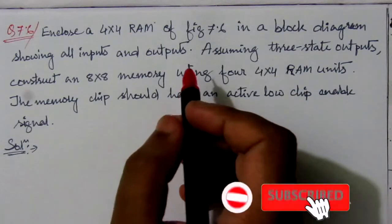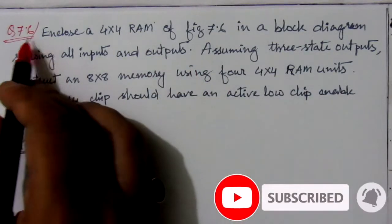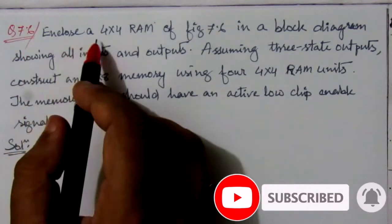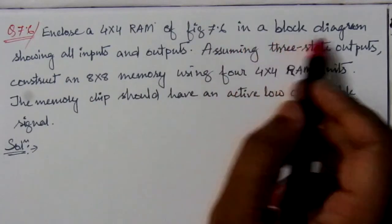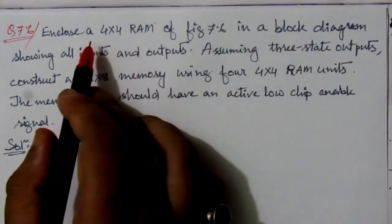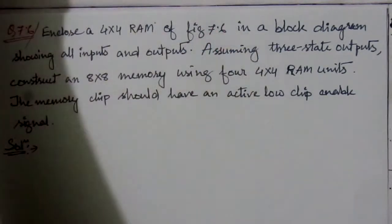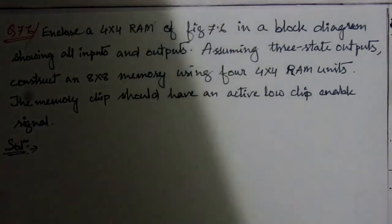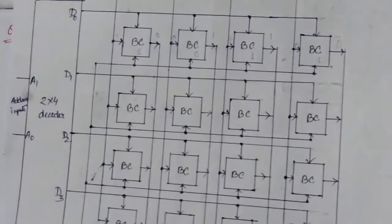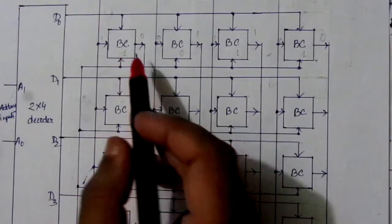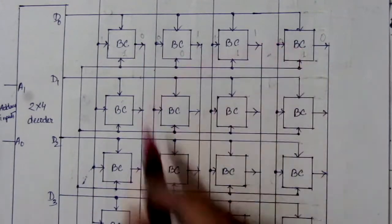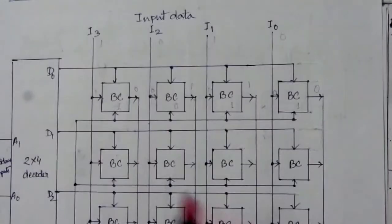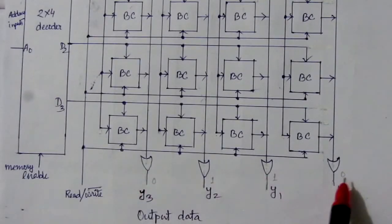In this video we will solve problem 7.6: enclose a four by four RAM of figure 7.6 in a block diagram. The RAM circuit of figure 7.6 has four rows and four columns of binary cells, which is why it is called a four by four RAM. It has four input data lines and four output data lines.